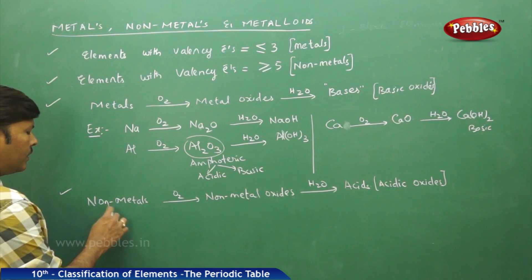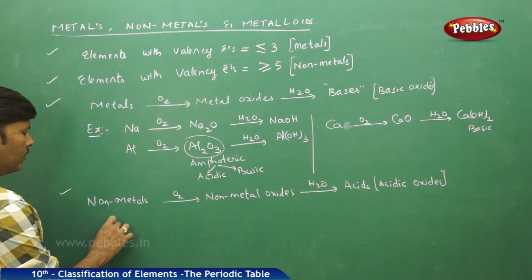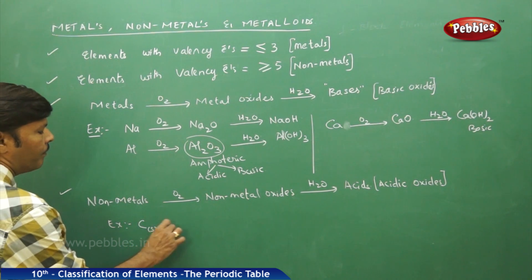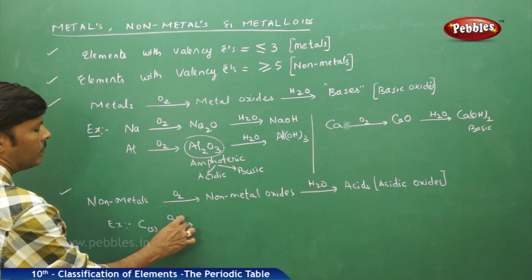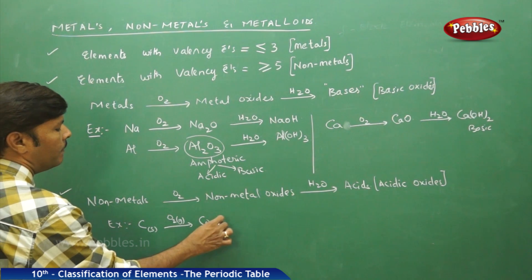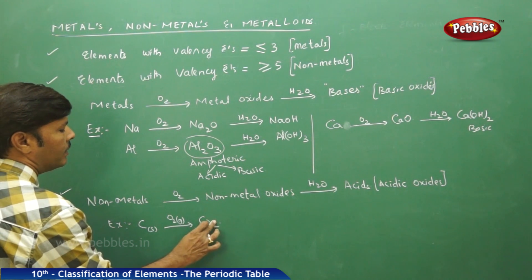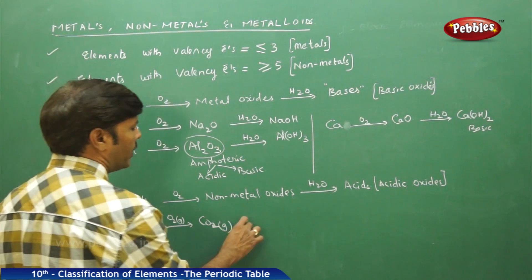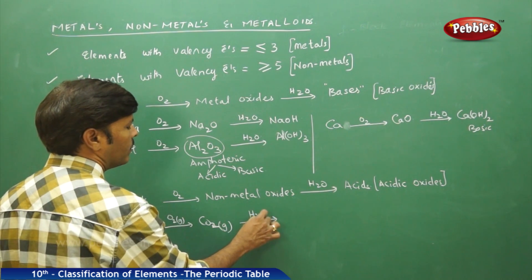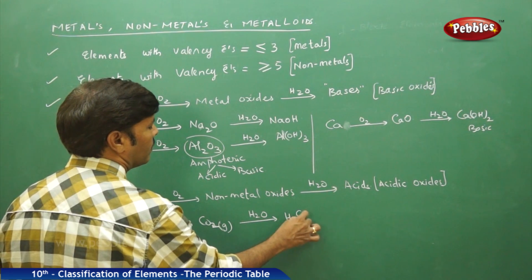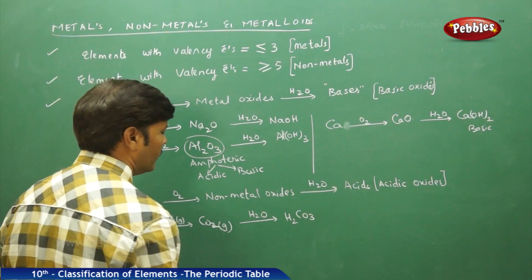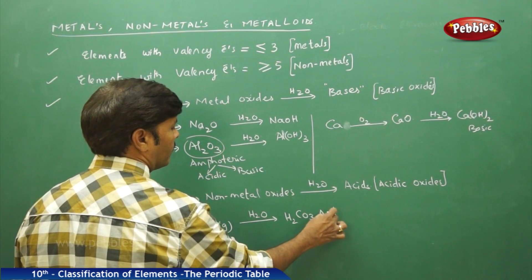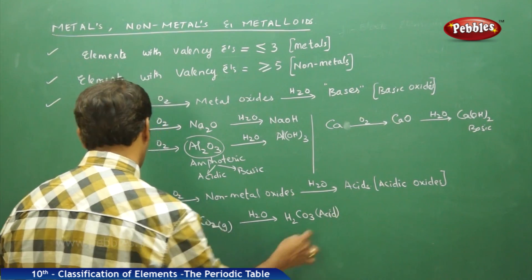We can take one or two examples. If carbon is a non-metal — carbon solid reacts with oxygen gas to form carbon oxide gas. Carbon oxide gas upon hydrolysis gives carbonic acid, H₂CO₃. Carbonic acid is an acid.